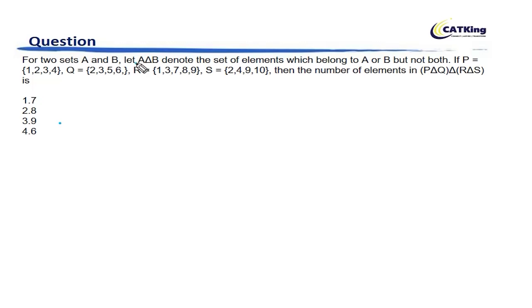It says that A delta B denotes the set of elements which belong to A or B but not both. So that's very important - it belongs to A or B but not both.